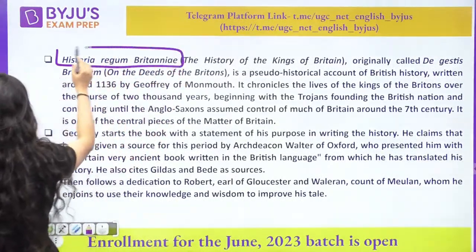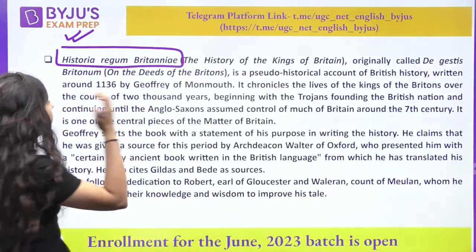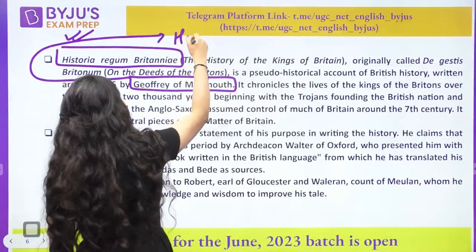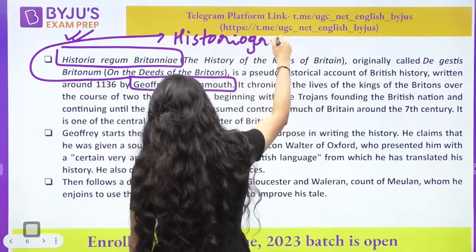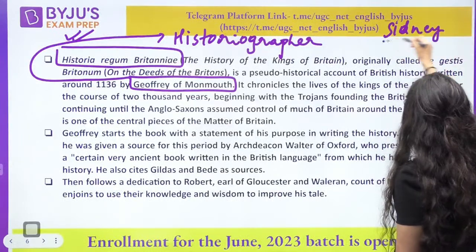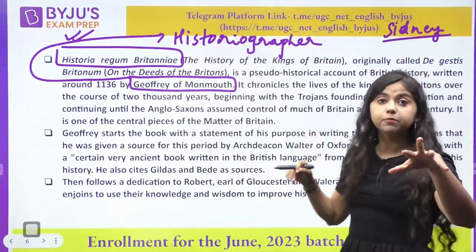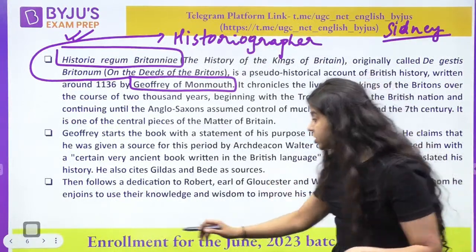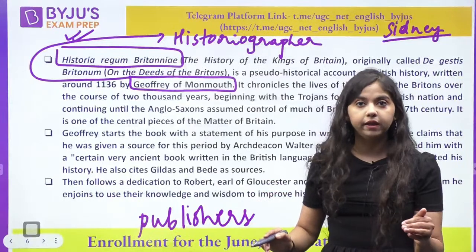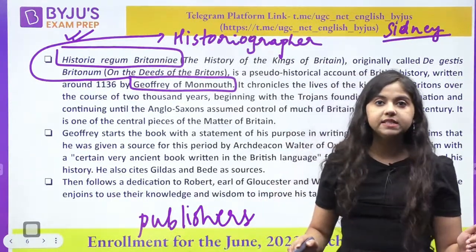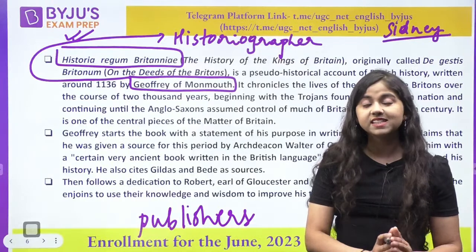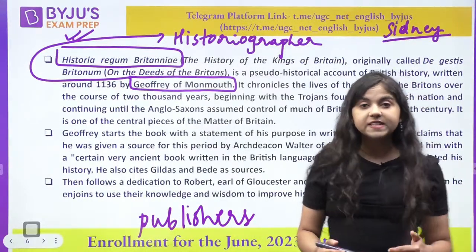Historia Regum Britanniae, or the History of Kings of Britain — what you have to remember is that Geoffrey of Monmouth was considered to be the first very important historiographer. Now, like Philip Sidney's Defence of Poesie or Apology for Poesie — what is the difference between the two? The publishers are different: Olney and Ponsonby. You are getting questions on publishers also. You are able to see that even though Dryden is considered to be the first royal historiographer, it's basically like a content writer.